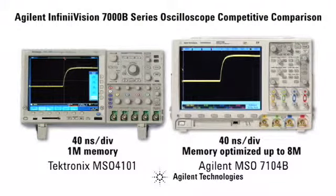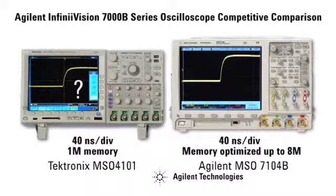Agilent's architecture always enables the maximum memory up to 8 megabytes for each measurement. Again, the glitch is not visible on the Tektronix scope.